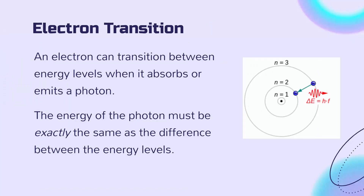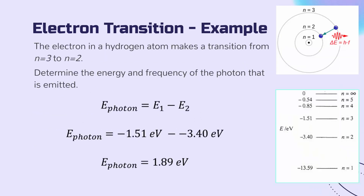An electron can make a transition between energy levels when it absorbs or emits a photon. The energy of the photon must be exactly the same as the difference between the energy levels. Let's take a look at an example. Imagine we have the electron in a hydrogen atom making a transition from energy level n equals 3 to n equals 2. We want to determine the energy and the frequency of the photon that is emitted when that transition takes place.